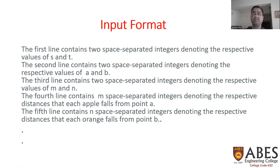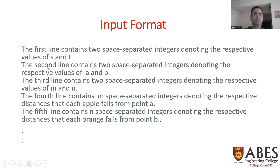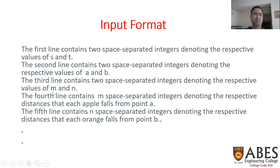Regarding the input format: the first line contains two space-separated integers denoting the values of S and T, which are the starting and ending points of Sam's house. The second line contains two space-separated integers denoting A and B — the locations of the apple tree and orange tree respectively. The third line contains two space-separated integers M and N, where M is the total number of apples and N is the total number of oranges.